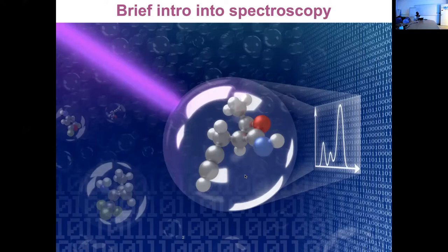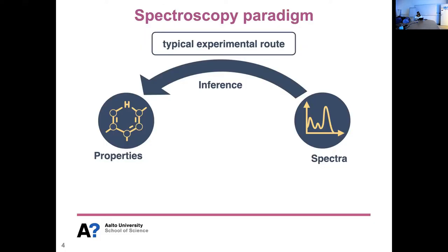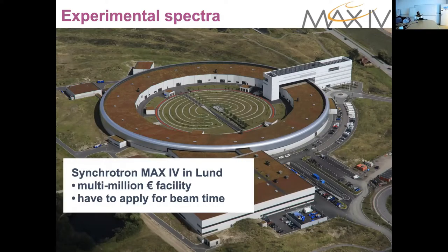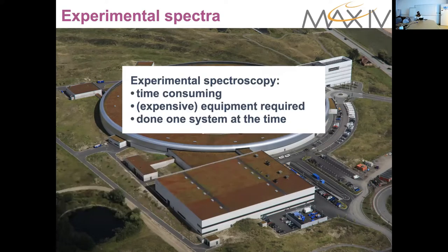A brief introduction about spectroscopy: usually what is done is in experiment you have some spectra which is first figured out, and then from the spectra you try to infer the properties of molecules from the various shapes in the spectra. This is typically done in expensive infrastructure where you'd have to apply for time, and it also costs a lot of money — and this needs to be done for one system at a time.